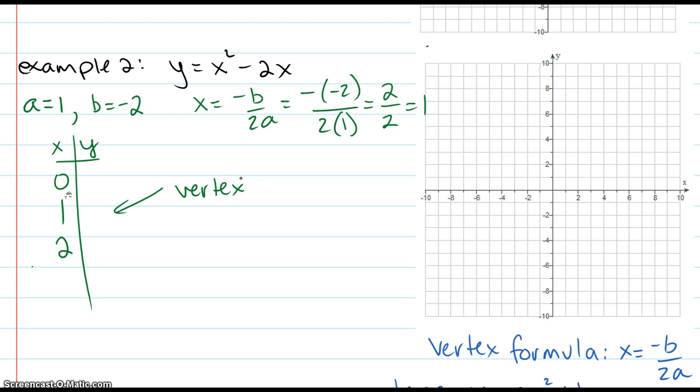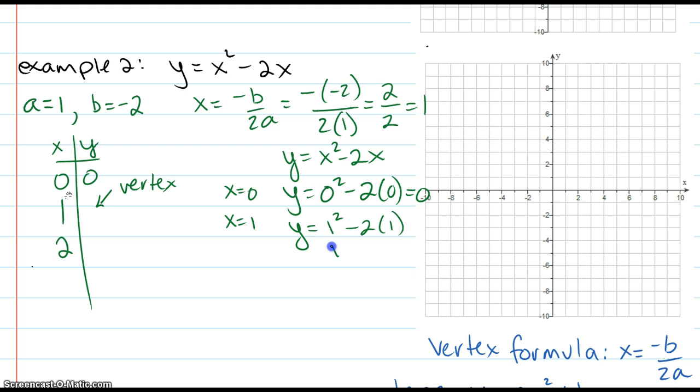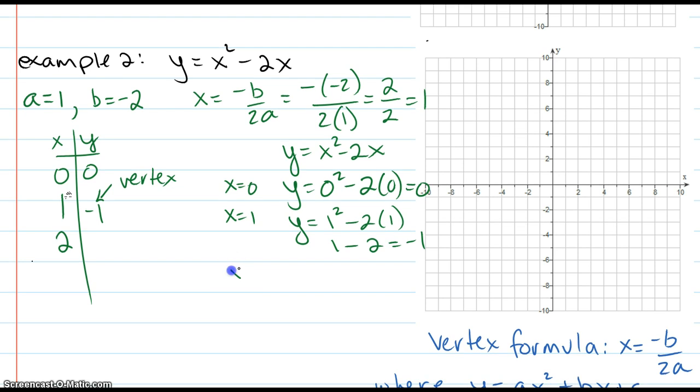So again, I'm just going to plug in those points, plug in 0 into my original. So let me rewrite my equation and plug in 0. I get 0. Plug in 1. I get 1 squared minus 2 times 1, which is 1 minus 2, which is negative 1. And then finally plugging in x equals 2 into my formula. You get 4 minus 4, which is 0 as well.